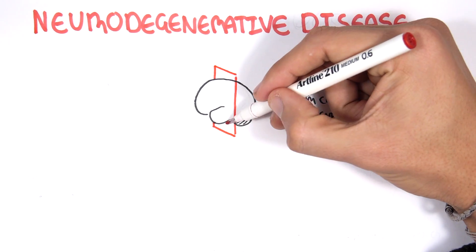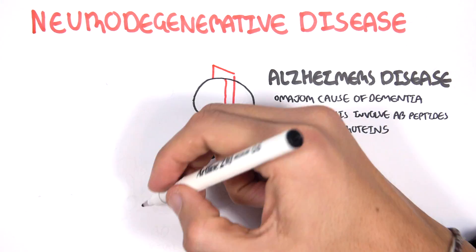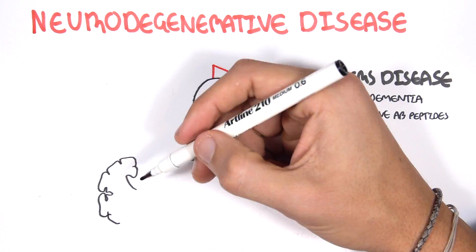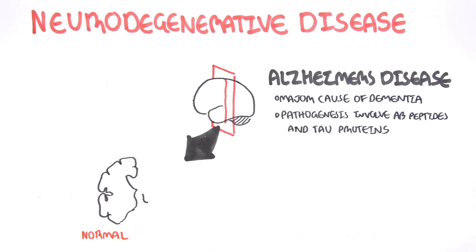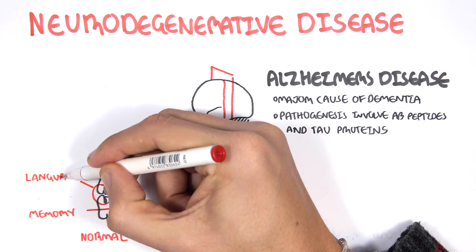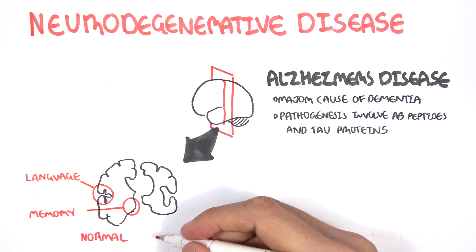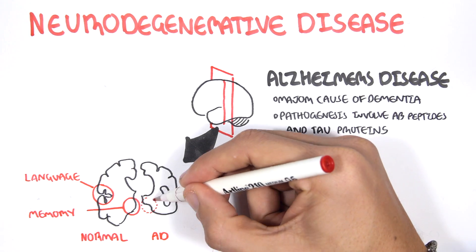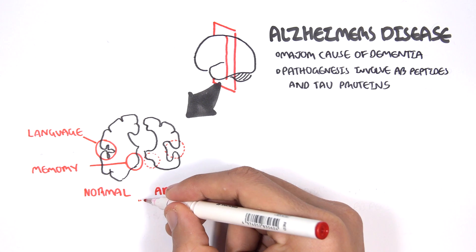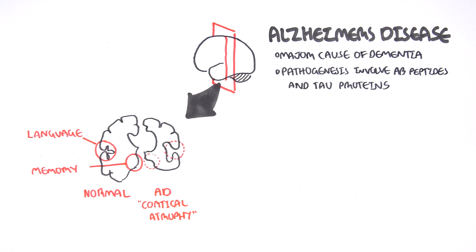If we were to cut a section of the brain and look at the difference between a normal brain compared to an Alzheimer's brain — on the left we can see a normal brain. These areas I'm circling correlate with language and memory areas. Comparing to a patient who has Alzheimer's, we can see cortical atrophy, as well as loss of those areas associated with language and memory. Thus, people with Alzheimer's disease present with problems in language and memory.